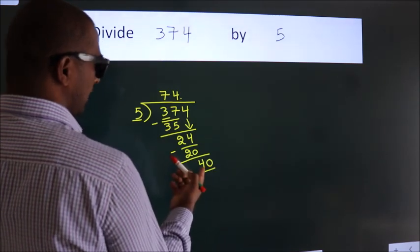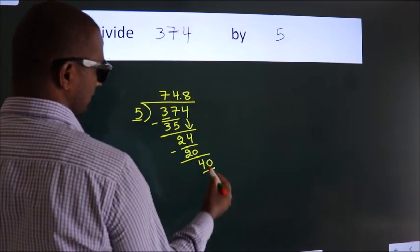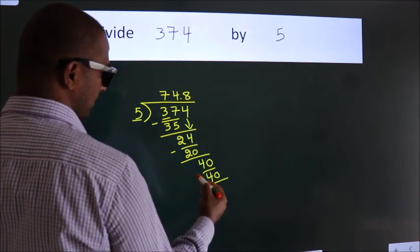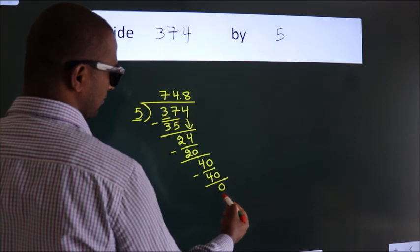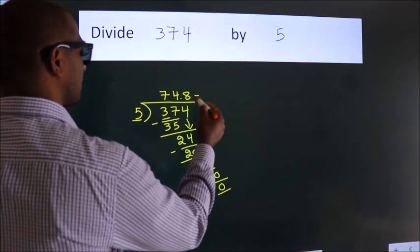When do we get 40 in the 5 table? 5 times 8 equals 40. Now we subtract. We get 0. We got remainder 0, so this is our quotient.